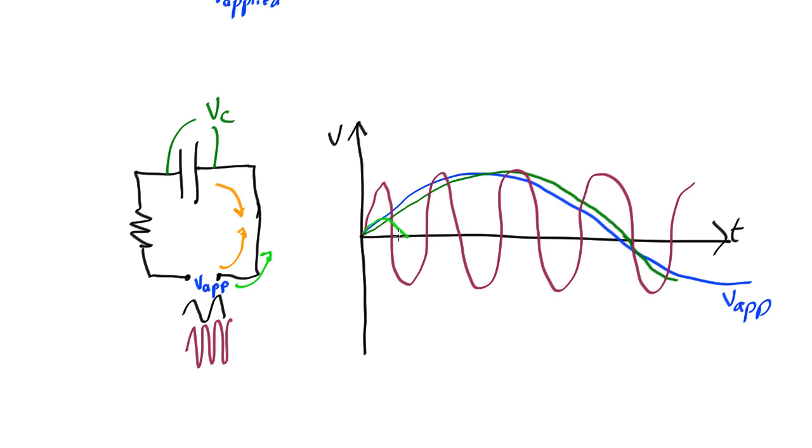So then they start coming back out again, but they haven't got time to get all the way out before it's going the other way again. So you end up with a very small oscillation wobbling about in the middle.